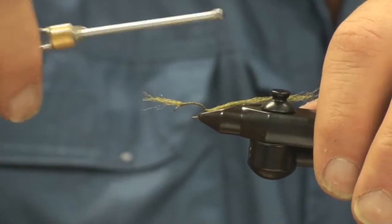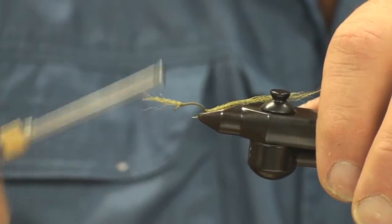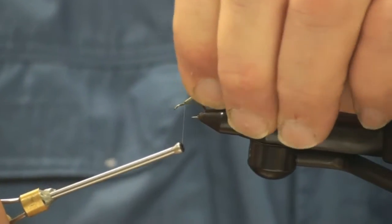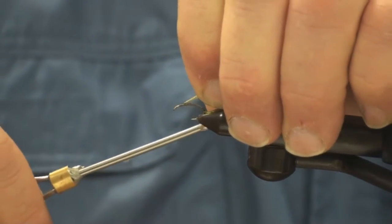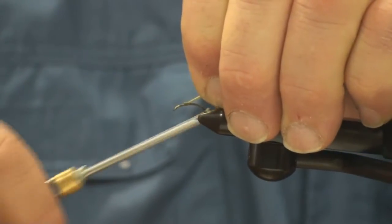Return your thread back to the starting point. Next, I'll take that remaining Antron in the front, bend that back, and put your thread over top of that.